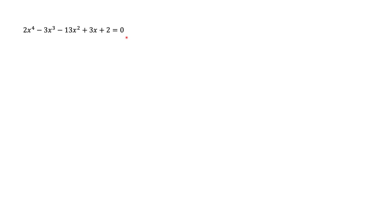So let's start with guessing. Obviously, we're not going to do some random guessing — we're going to make educated guesses. First of all, notice that all the coefficients in this equation are integers. Because of that, we can find all rational roots of this equation. To remind you, a number is rational if it can be represented as P divided by Q, where P and Q are both integers.